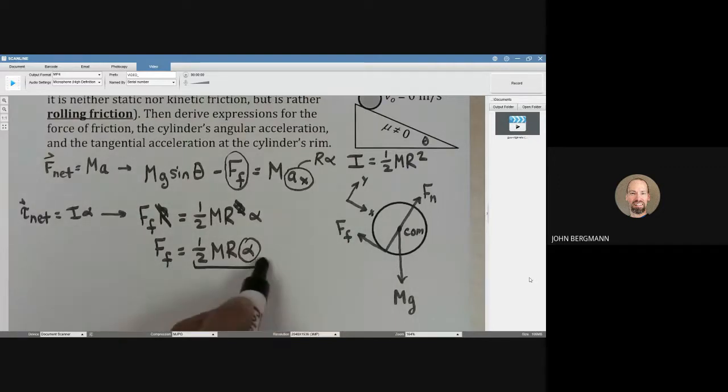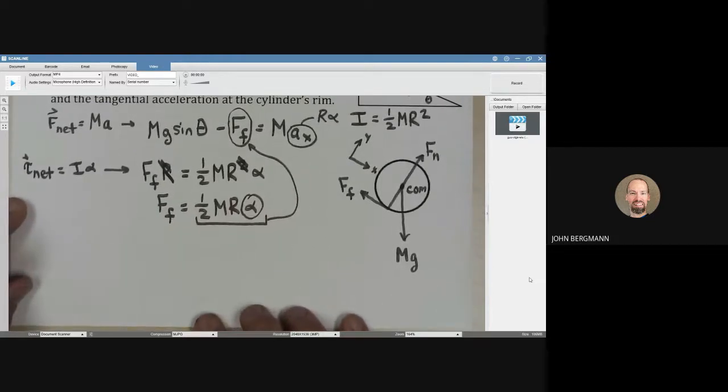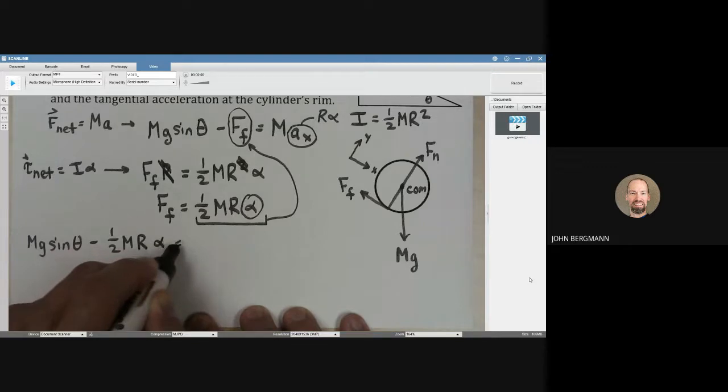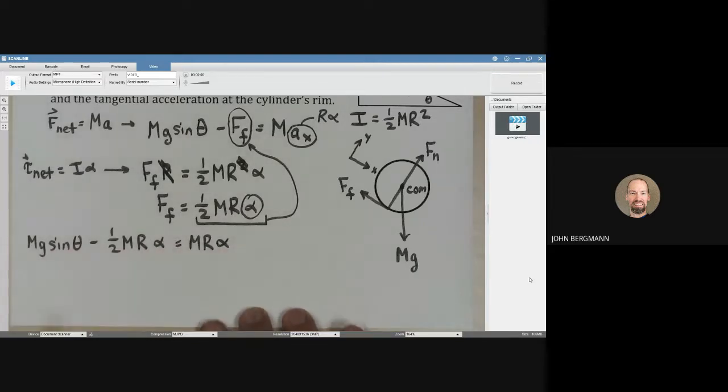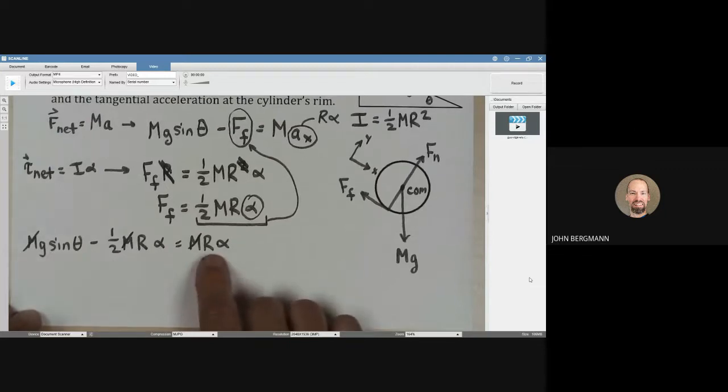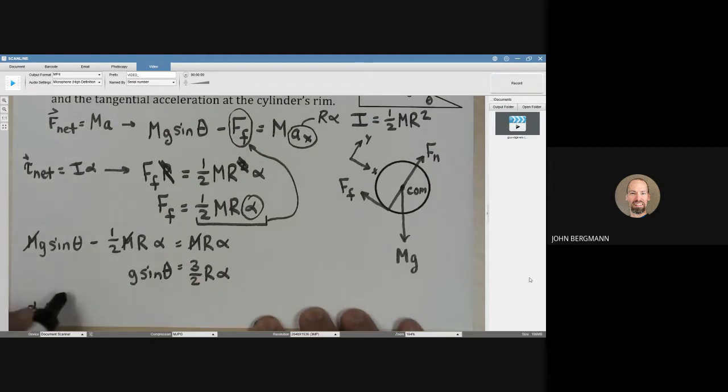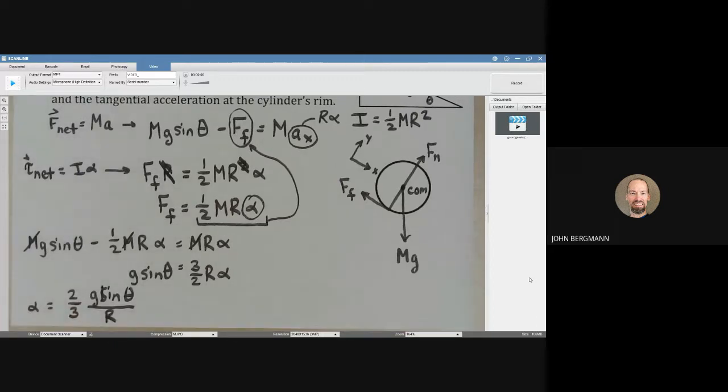This force of friction we're going to put in right there. Let's see if we can make some sense of this. m g sine theta minus one-half m r alpha equals m r alpha. I'm seeing an m cancel from every term. Here I have one-half r alpha and here's a whole r alpha, so that gives me three-halves r alpha equals g sine theta. Alpha is going to be two-thirds g sine theta over r, or 2g sine theta over 3r.